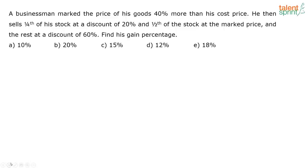The first question is there on your screen. A businessman marked the price of his goods 40% more than his cost price. He then sells one-fourth of his stock at a discount of 20%, half of the stock at the marked price, and the rest at a discount of 60%. Find the gain percentage.